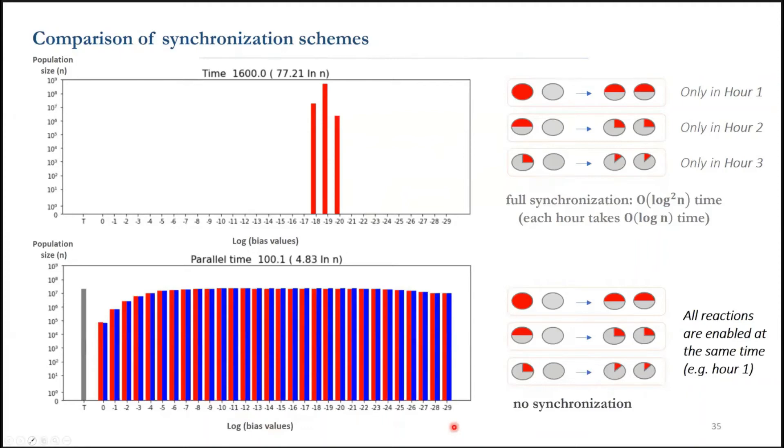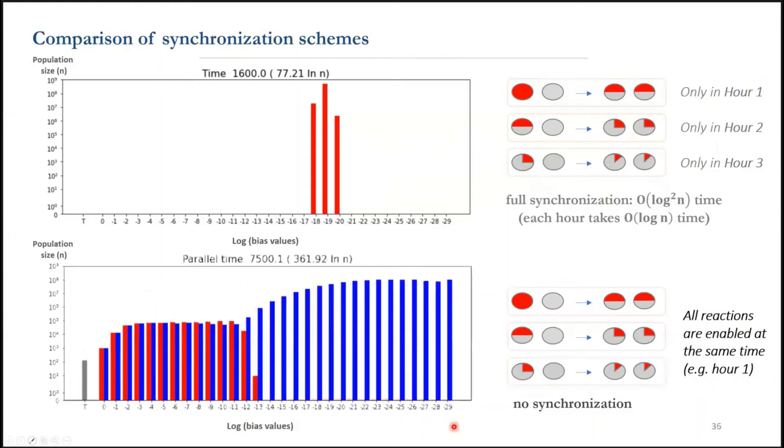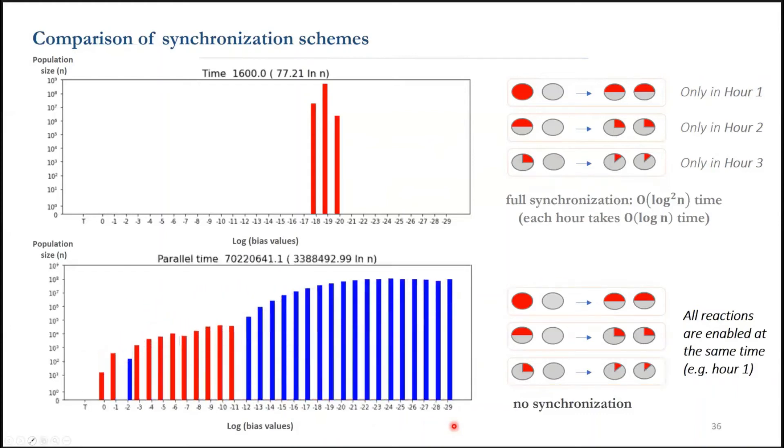Even if we continue the computation, the agents are not guaranteed to converge to one vote. As you see, the agents are now stuck in a configuration with no more neutral agents. And for each bias value, it's either blue or red. So they cannot even cancel.